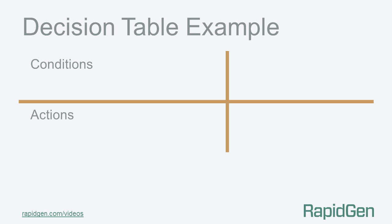The bottom part of the decision table has the actions. These are the procedures or operations we want to perform depending on the conditions. So a simple action stub is 'get a drink' with a corresponding entry to either do it — the x — or not — the dot.